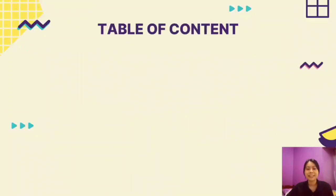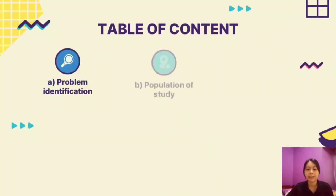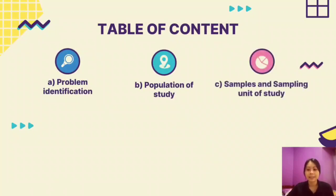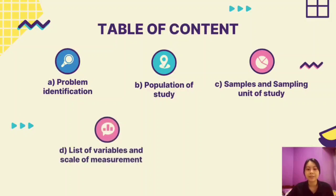This is our table of contents. We will be talking about our problem identification, population of studies, samples and sampling unit of studies, list of variables and scales of measurement, and lastly, data collection.